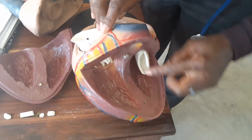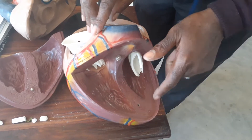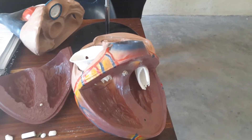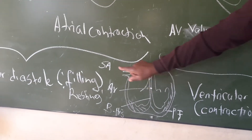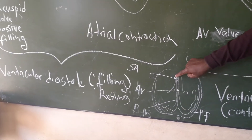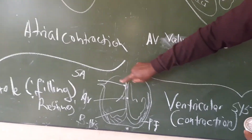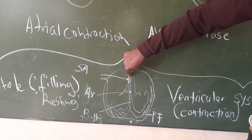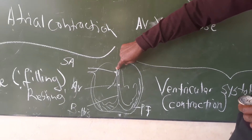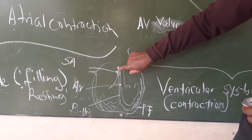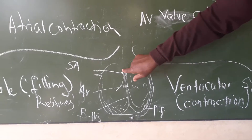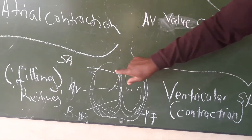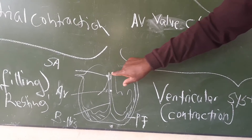You have the ventricles and the septum, which is the center of the heart. Now let's go to the heartbeat. How the heart beats is as follows: the first beat is initiated by special cells in the SA node, which is called the sinoatrial node — also called the pacemaker. This is where the electrical impulse is started. It causes your heart to contract.